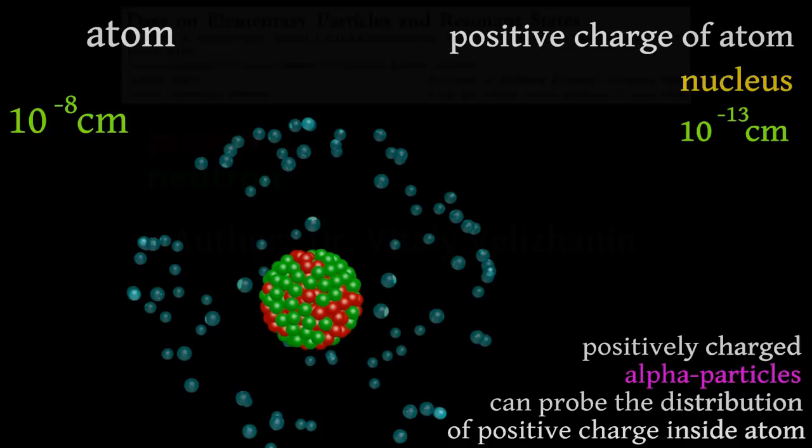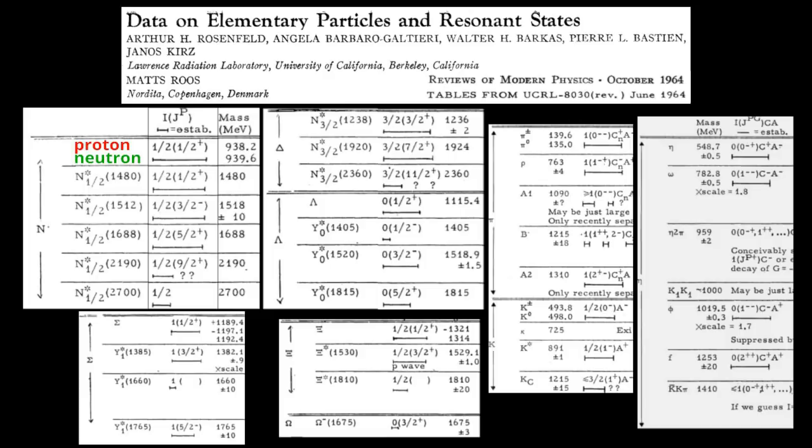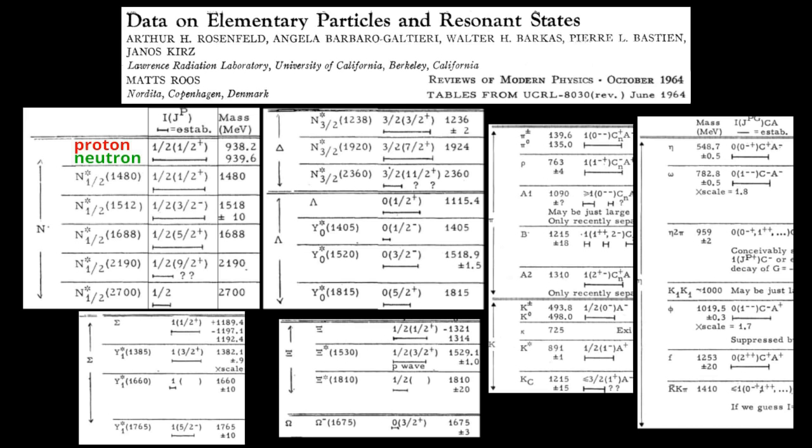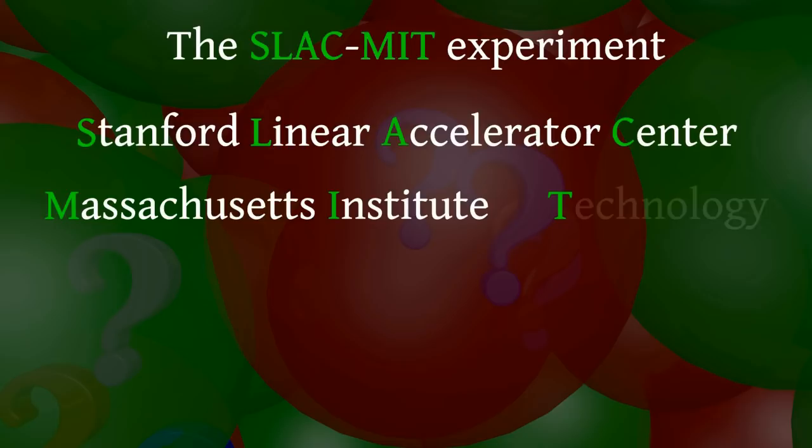In the middle of the 20th century, a lot of subatomic particles similar to the proton and neutron were discovered. It seemed that by analogy with the periodic table, some fundamental building blocks should exist. Different theoretical models were built, but it was necessary to look inside some of these particles. Such an experiment was performed by the SLAC-MIT collaboration, and the idea of this experiment was very similar to the gold foil experiment.